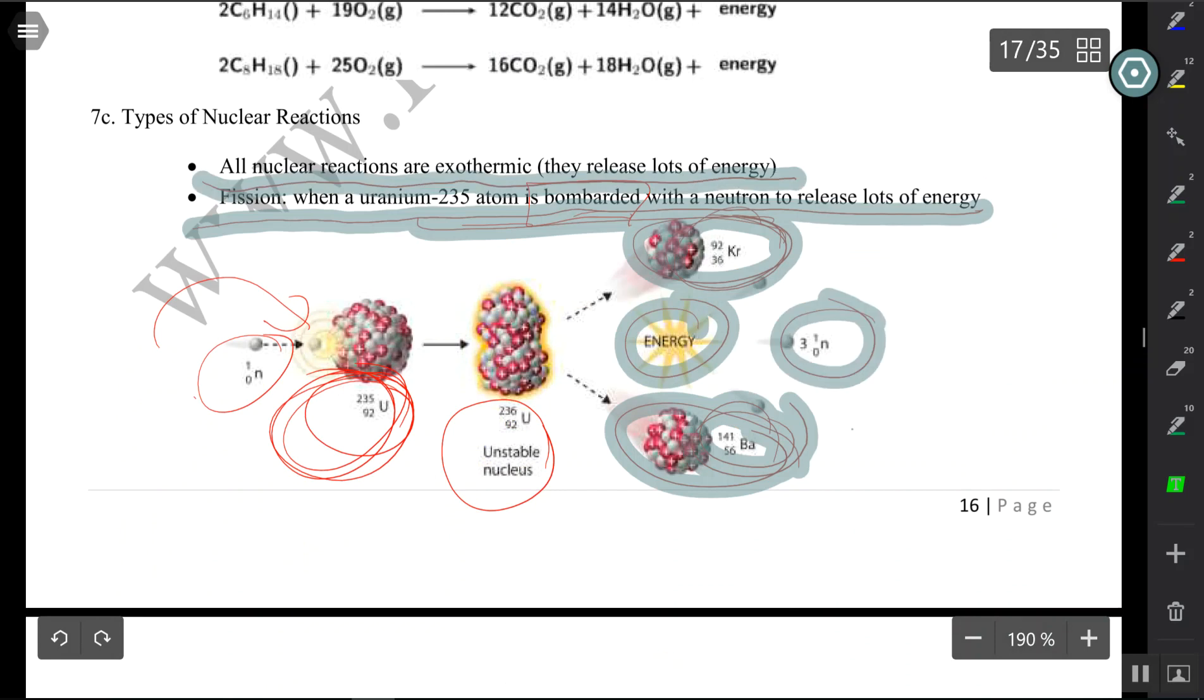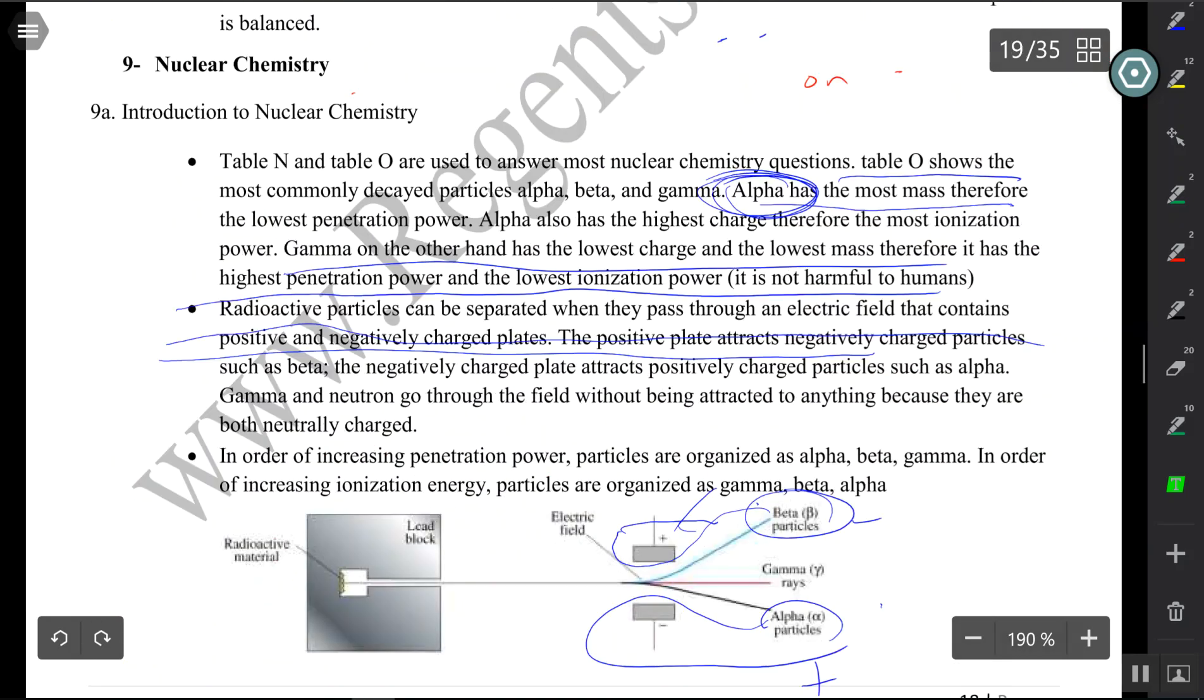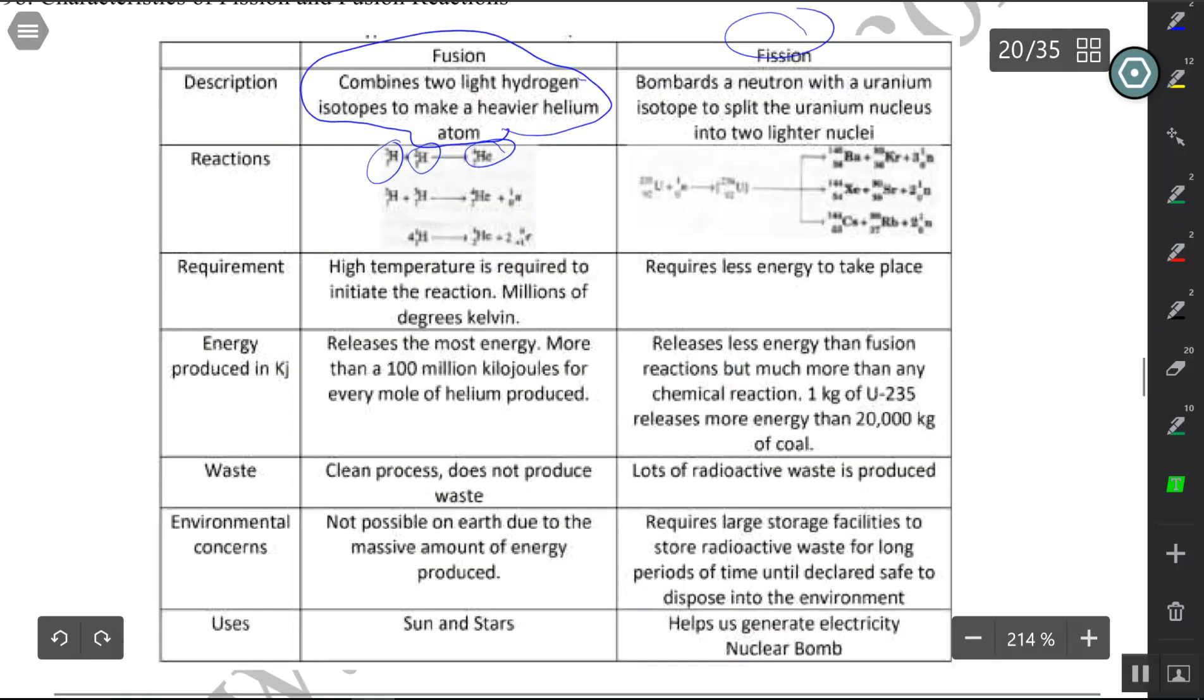Here is fission. You take uranium-235, you bombard it with a neutron to create uranium-236, which is very unstable and will decay into krypton and barium and produce a whole lot of energy.